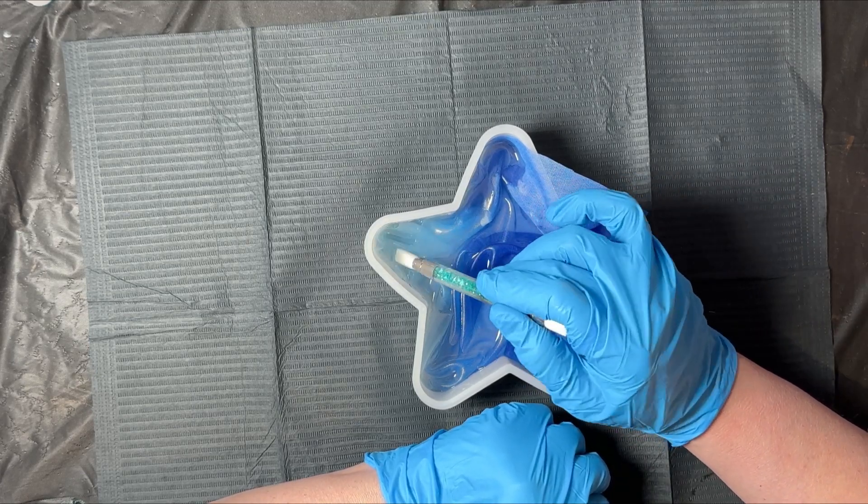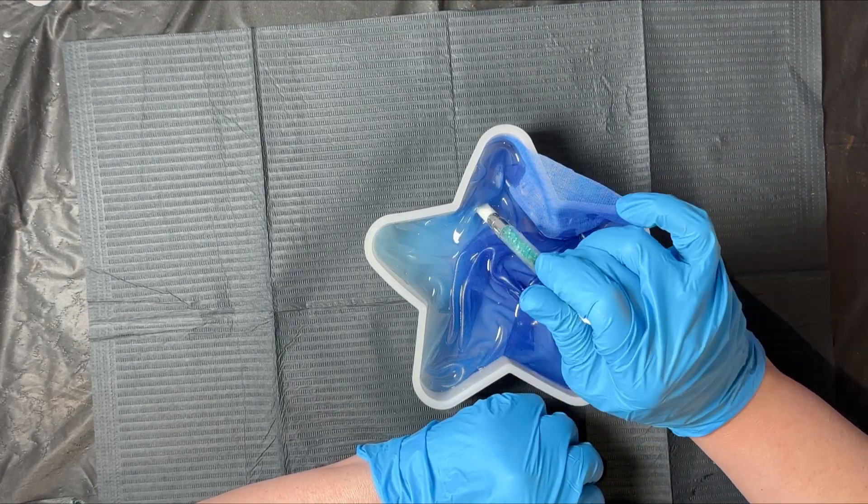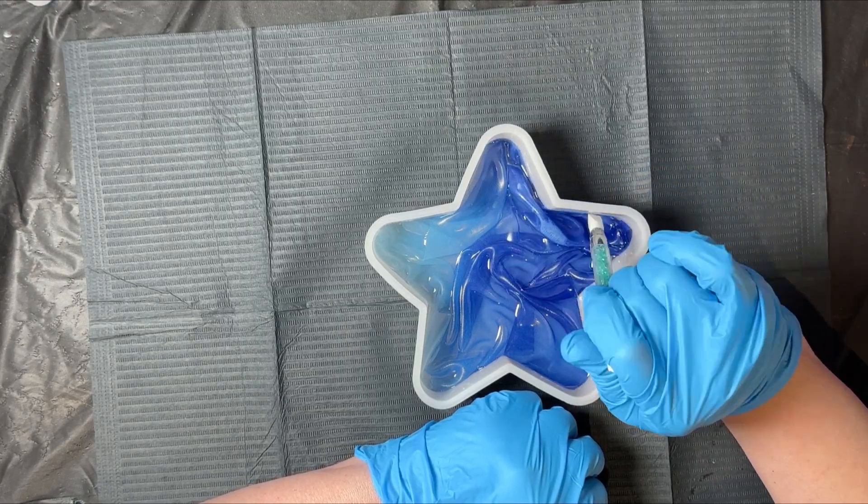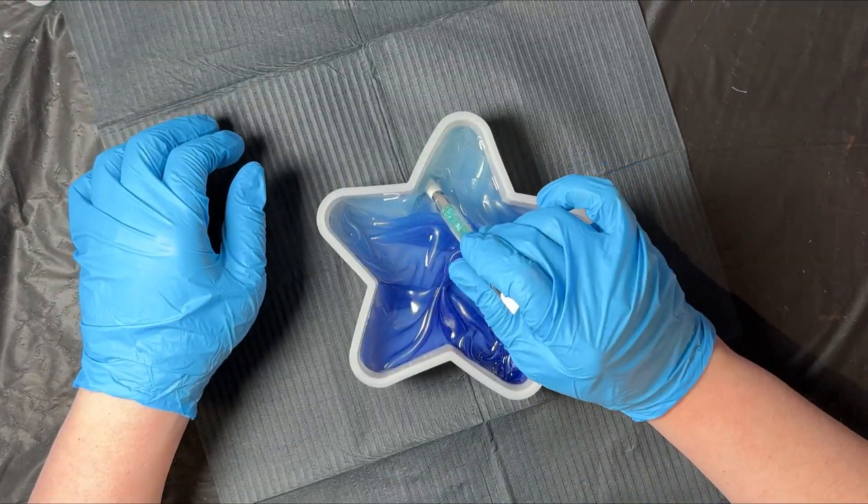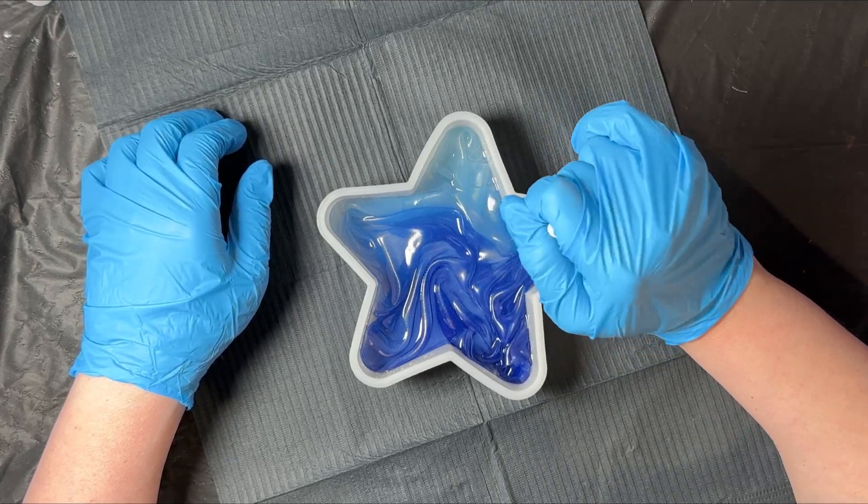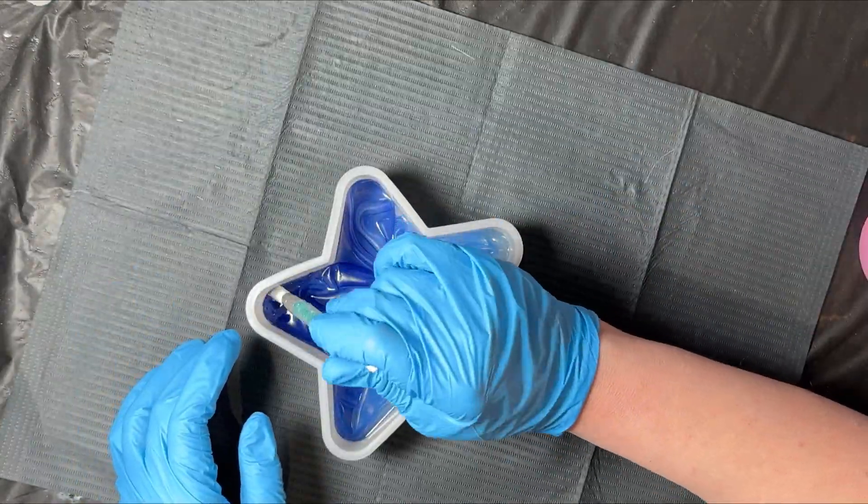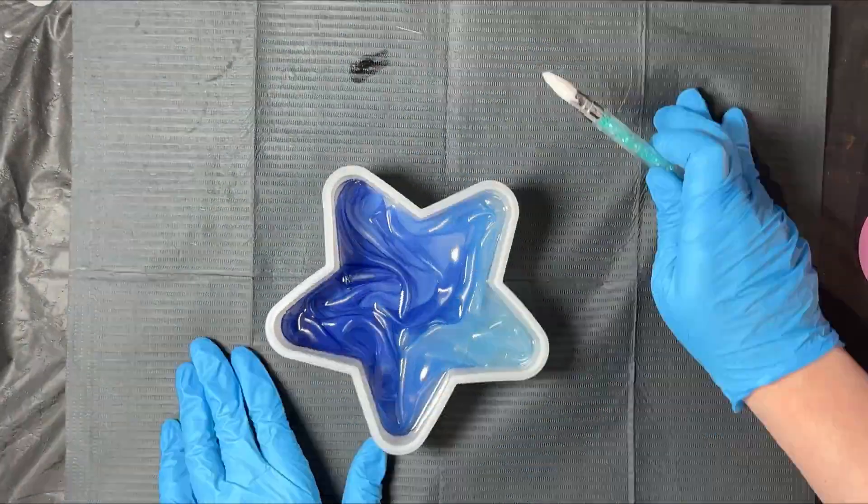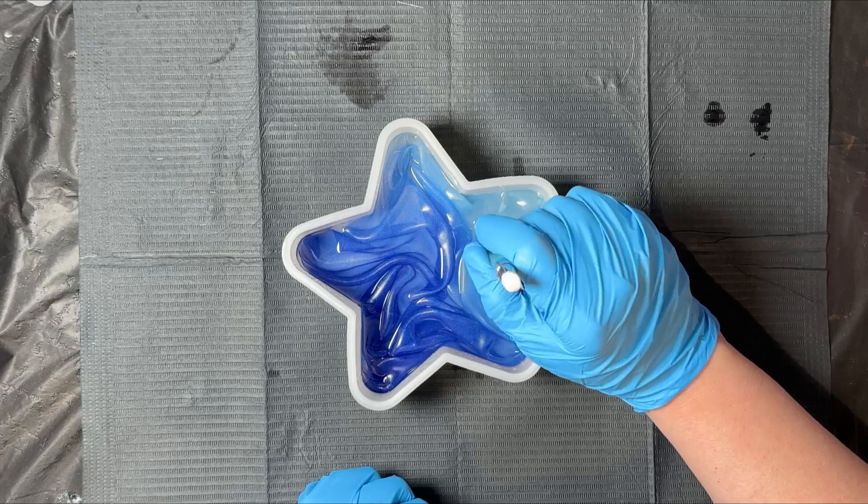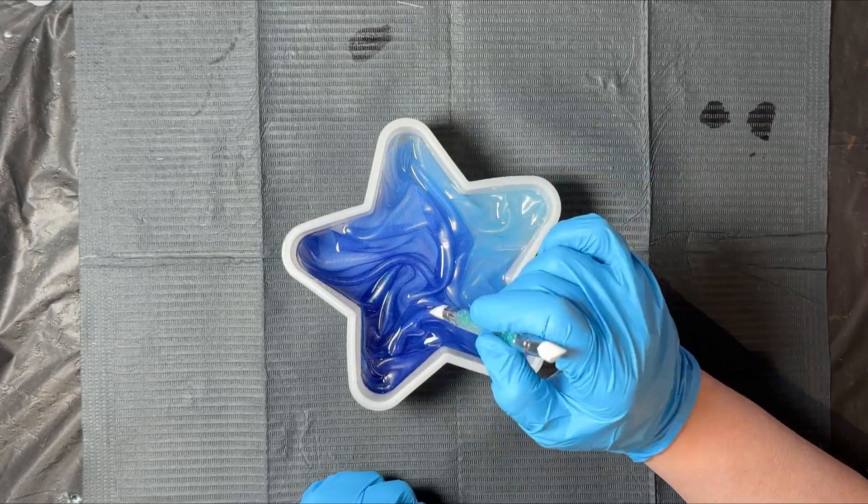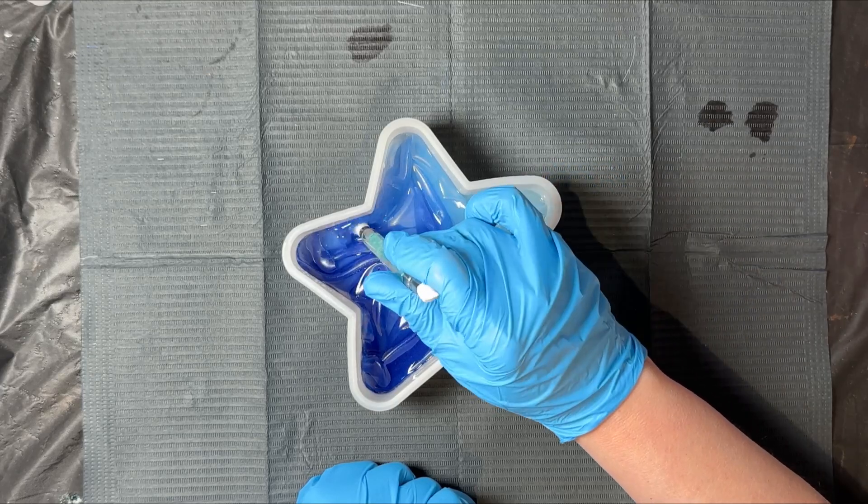But since this was my first try at this, I wanted to do it as close to what I had seen actually worked as opposed to starting off with something large. Once you have it all in the mold, just work the design, try not to introduce new bubbles, get out any that you might find, spritz it with some isopropyl alcohol, and then just let that sit and cure per your manufacturer's instructions.